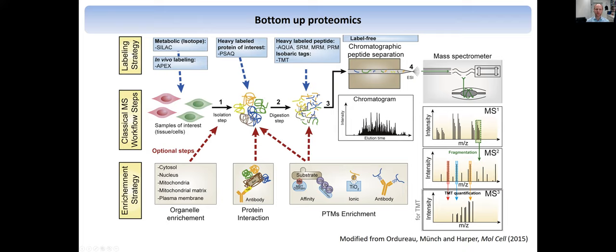There are also different quantification methods. The most common ones are either on the cell level, for example SILAC labeling — so metabolic labeling, where you change amino acids from a light to a heavy version with naturally occurring isotopes — and also there's a lot of methods available on the peptide level. Something that's become very prominent over the last years is isobaric tags, for example TMT.